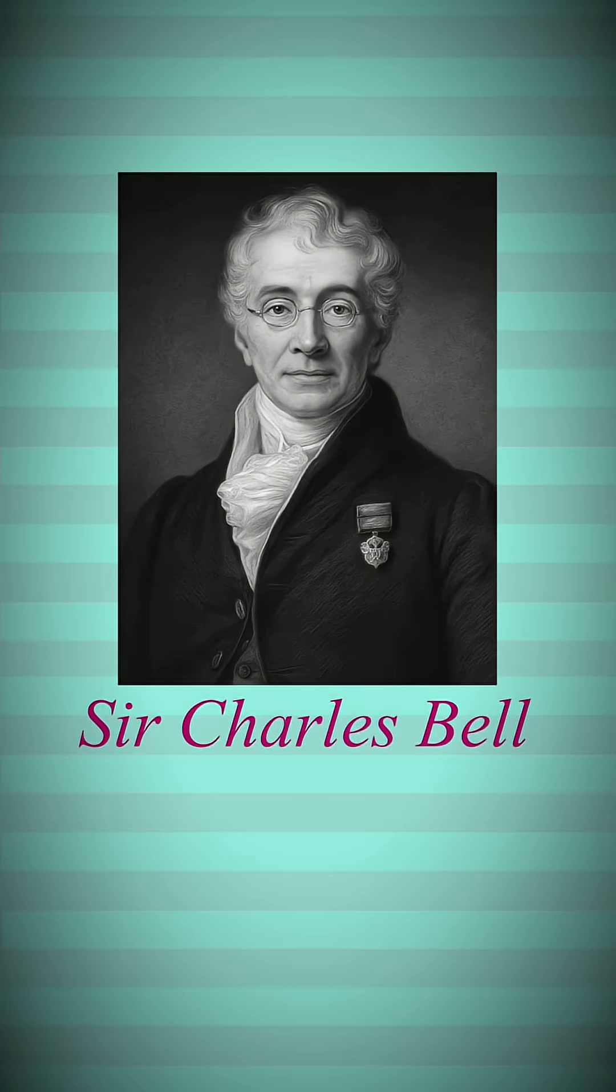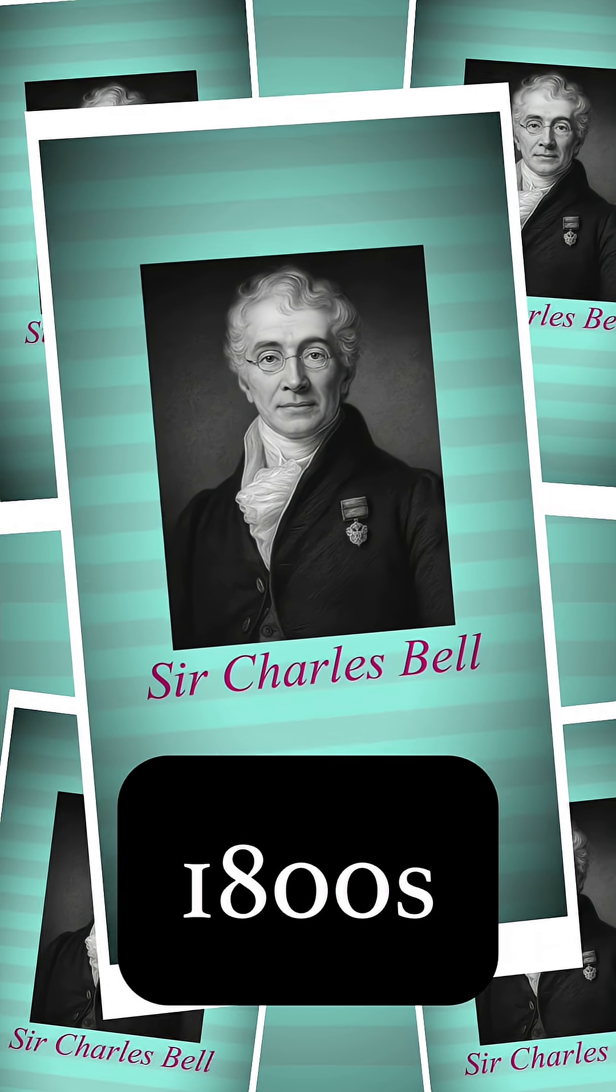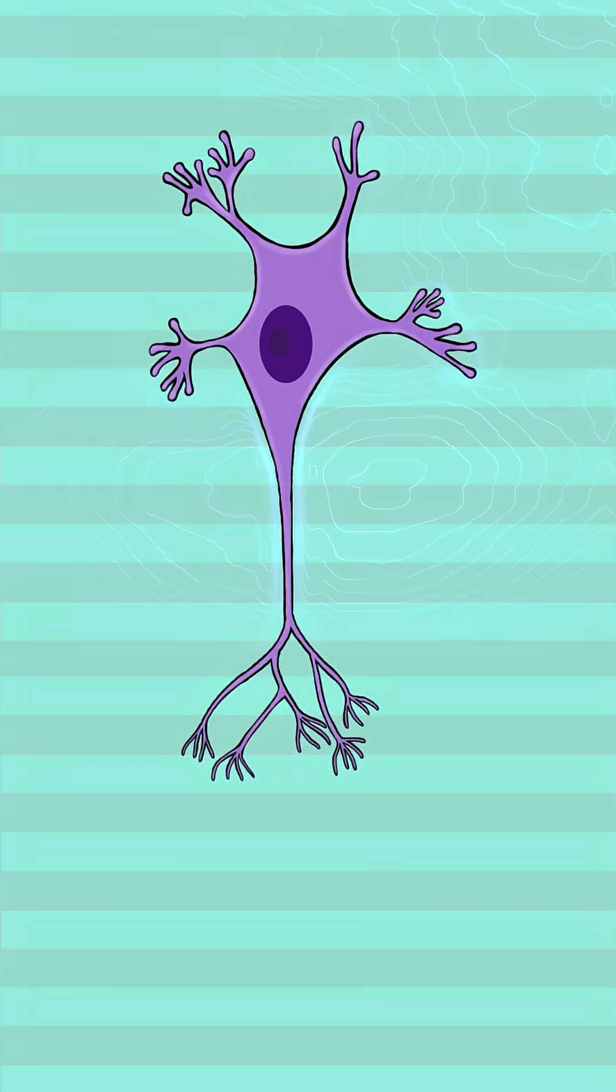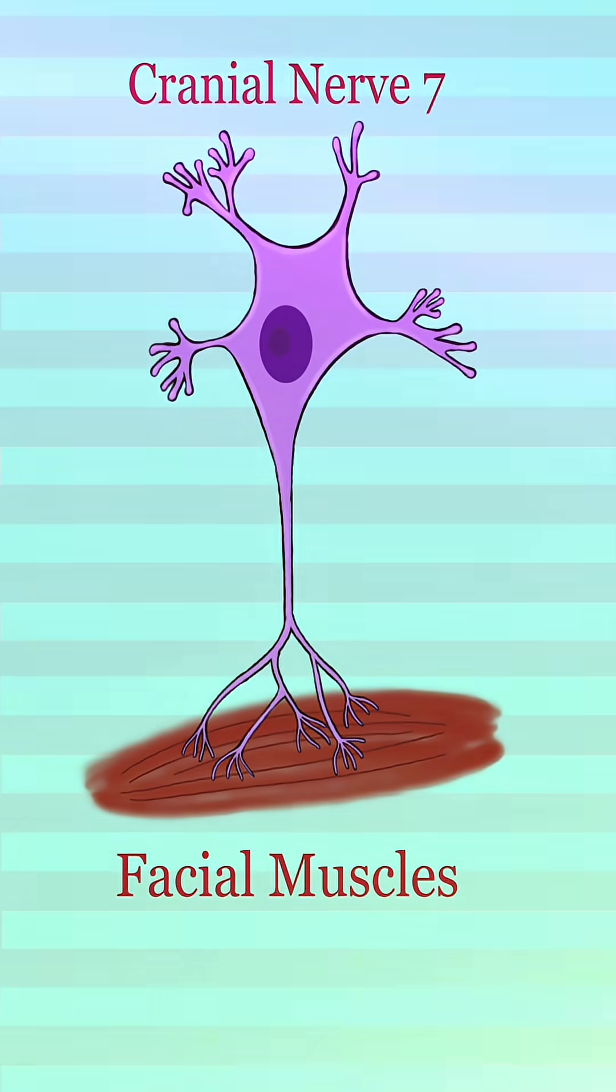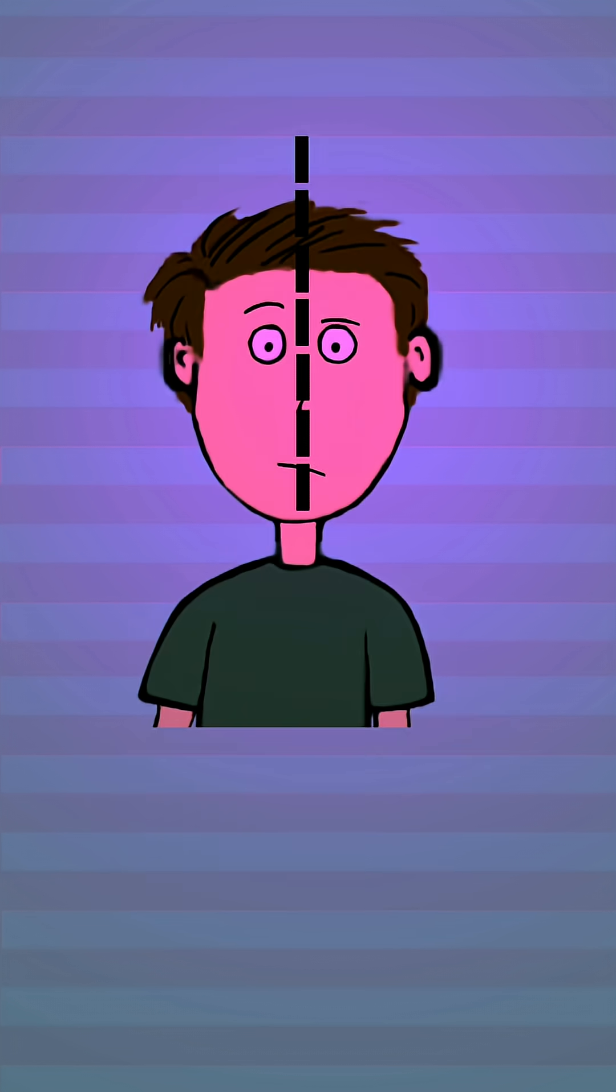Bell's palsy, discovered by Sir Charles Bell in the early 1800s, is a condition where cranial nerve 7 is impacted for various reasons, affecting your facial muscles so that ultimately you may develop a facial droop.